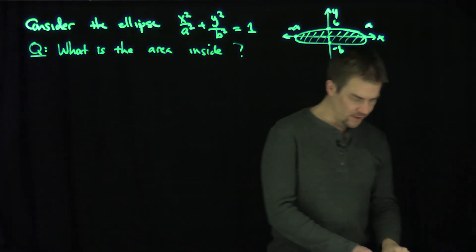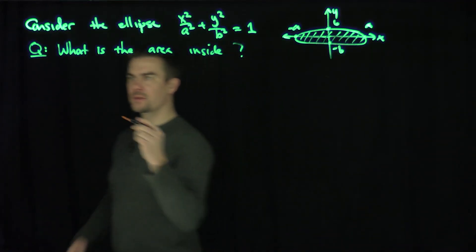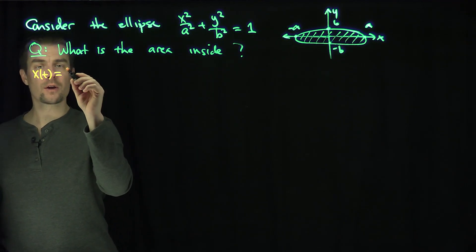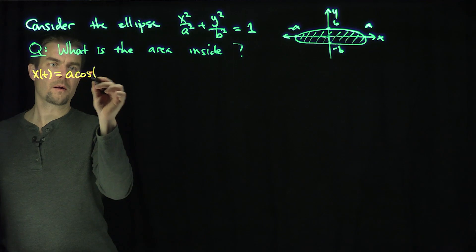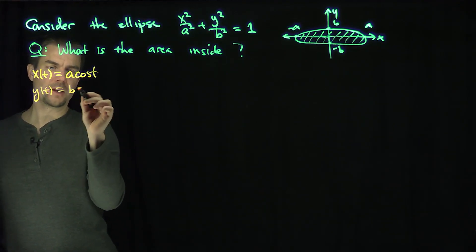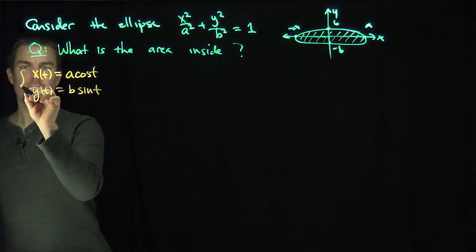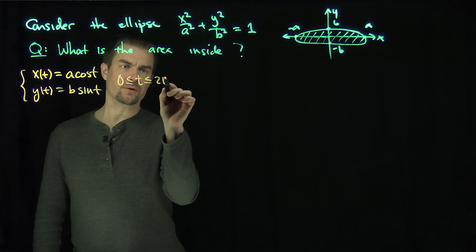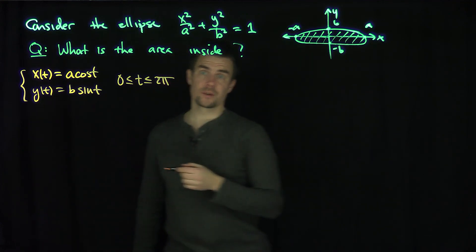So to answer this, we're going to parameterize the ellipse. So we can parameterize this ellipse as follows: x of t is equal to a cosine of t, y of t is equal to b sine of t, for t between 0 and 2 pi. 0 less than or equal to t, less than or equal to 2 pi, is a parameterization of this ellipse.